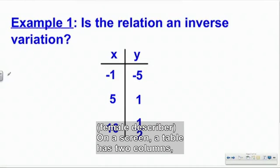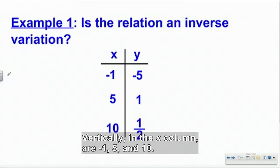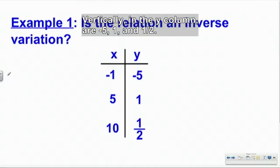On a screen, a table has two columns, one labeled x, one labeled y. Vertically, in the x column, are minus 1, 5, and 10. Vertically, in the y column, are minus 5, 1, and 1 half.